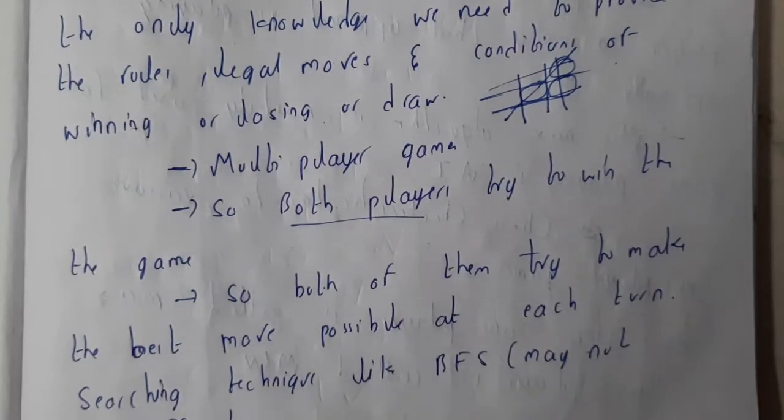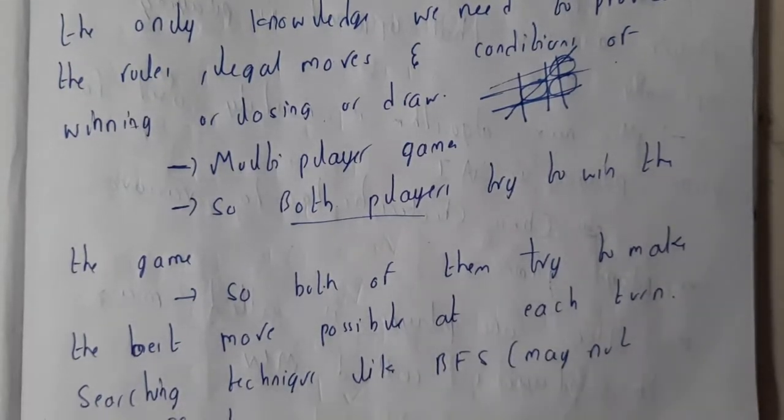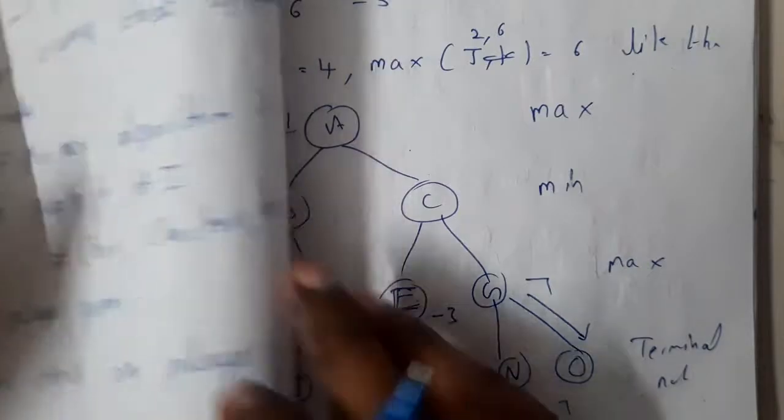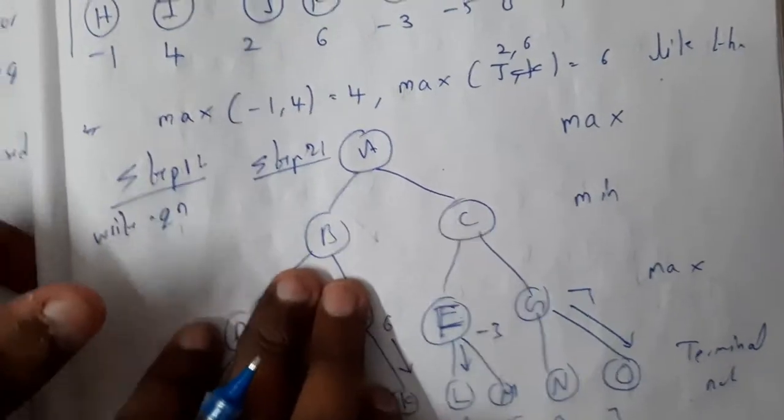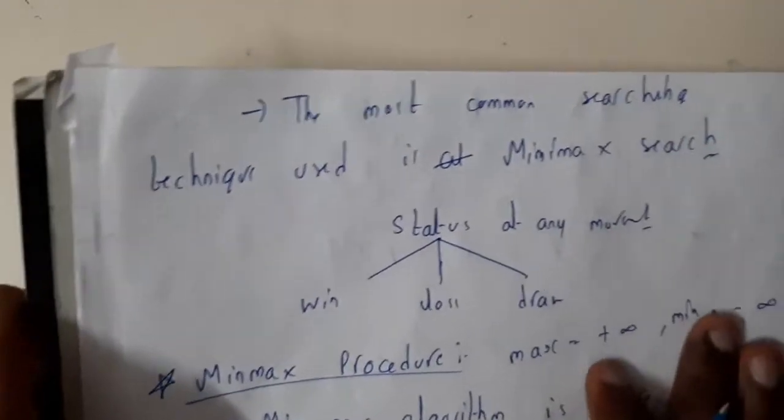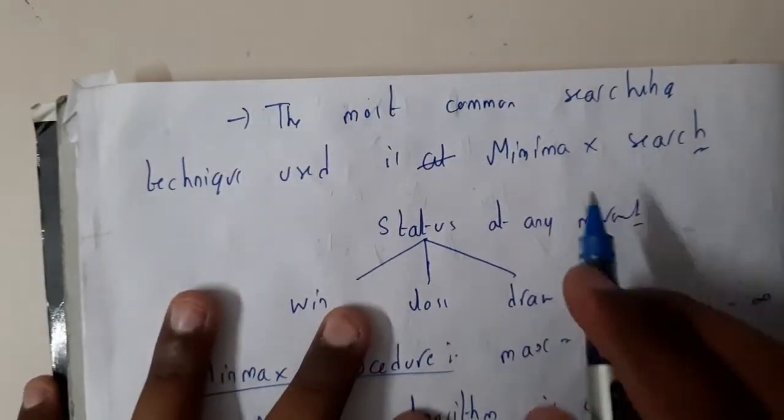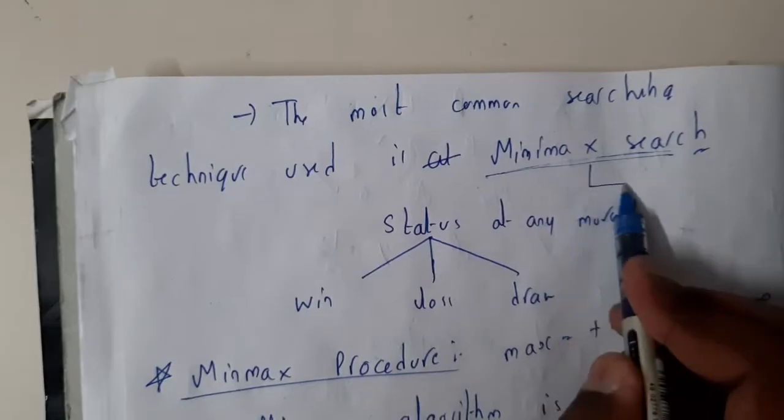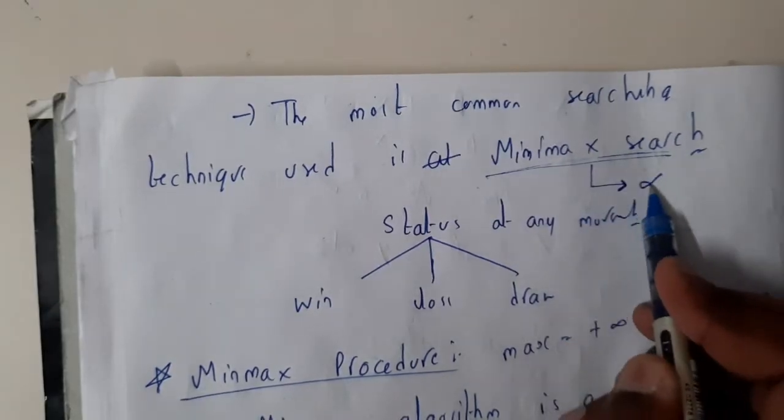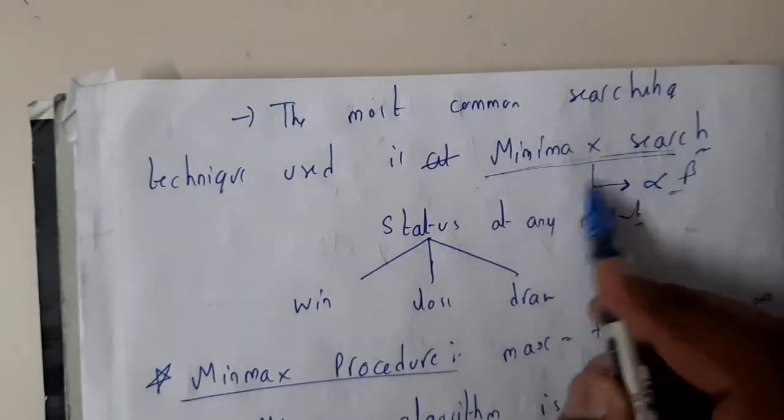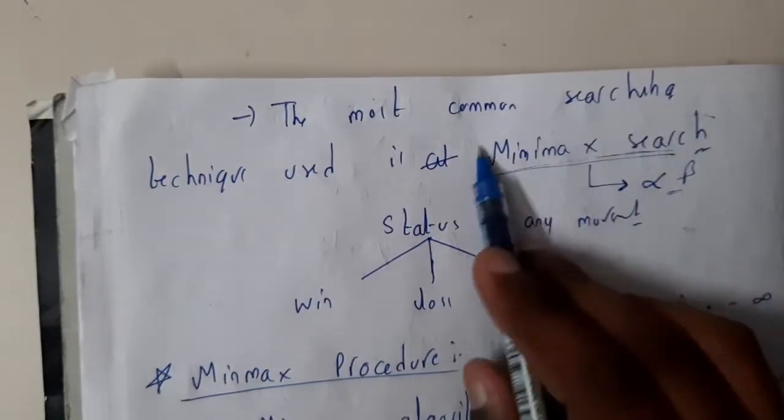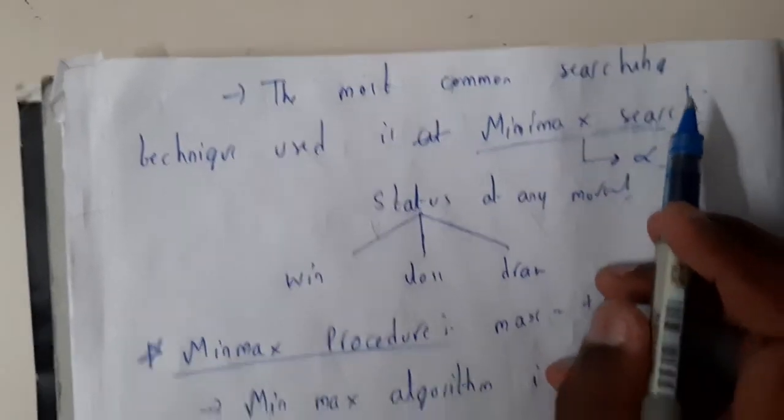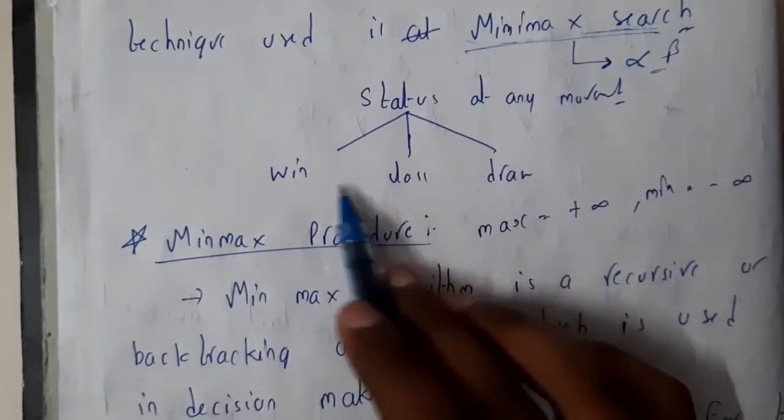Search techniques like BFS may not be efficient - they will take a bit long time, which is the reason why they are not used much in these kind of things. The most common searching technique we will be using is minimax search. Due to some disadvantages of minimax, we are using alpha-beta pruning, which we'll discuss in the next lecture. The three statuses which we will be taking for games is win, loss, and draw.